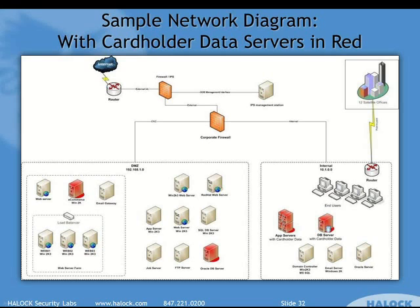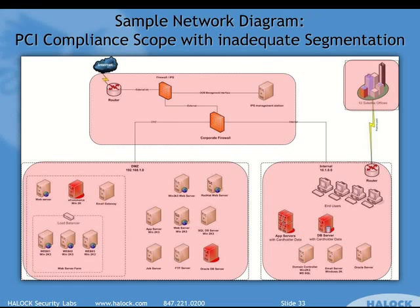In this kind of an environment, the scope of PCI compliance would look something like this — everything would be in scope. Remember that connected systems rule. All these various connected systems that are in those same segments are automatically in scope. And even these satellite offices, because they're just connected by a point-to-point router without a firewall feature set, that would be considered a flat network, and they are in scope.